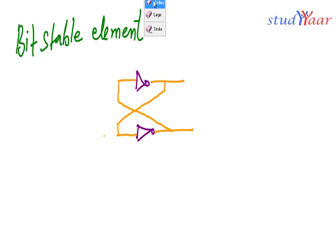This is basically your bit-stable element. A bit-stable element has two symmetrical outputs: this is Q and this is Q-bar. These are two symmetrical outputs, which you can also call two symmetrical inputs. Let's see how this circuit behaves.